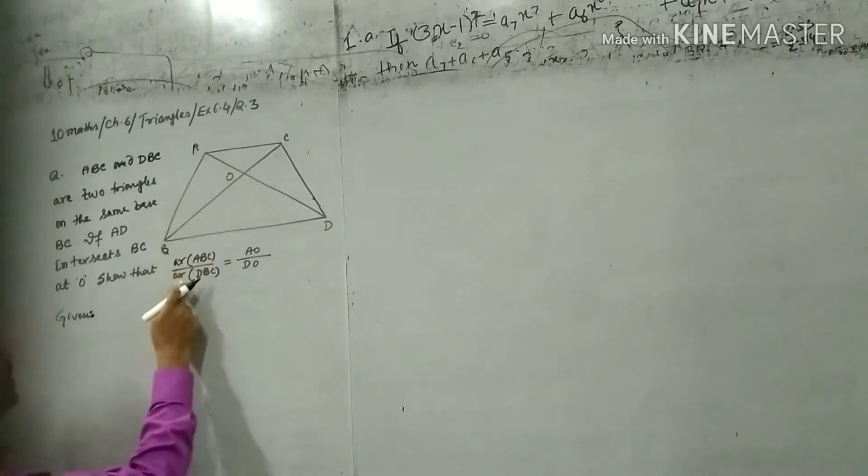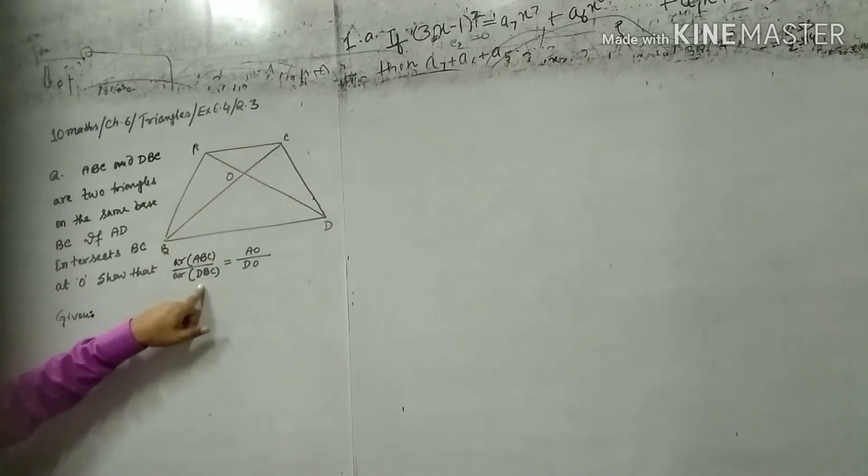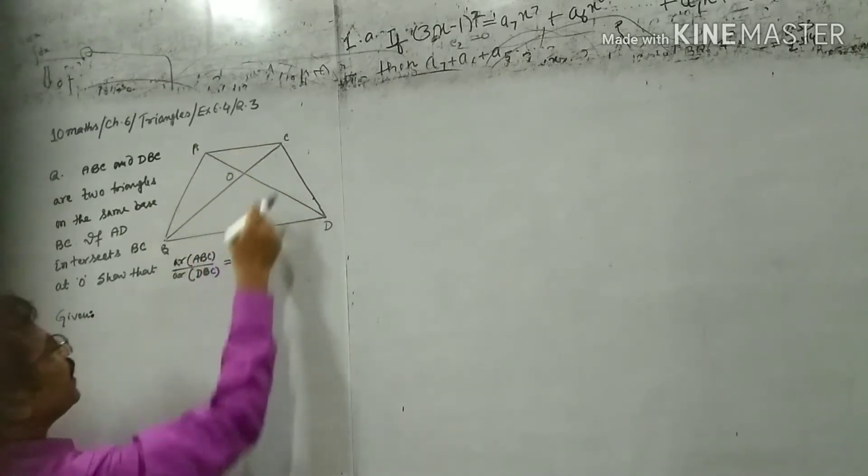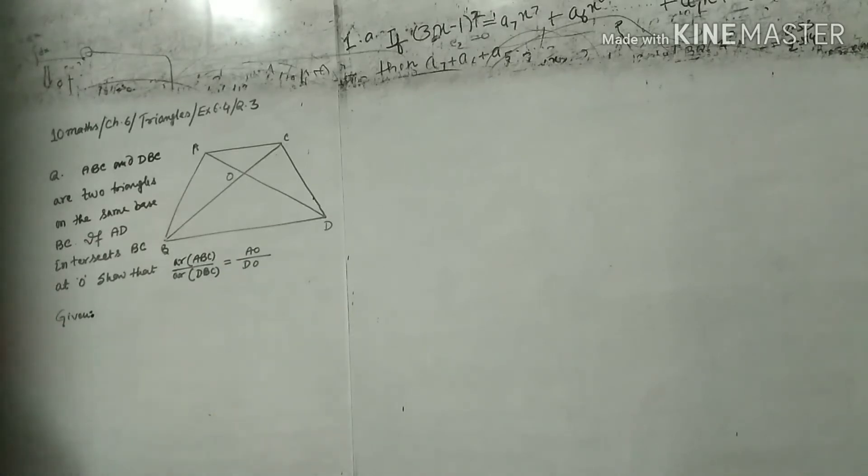Prove that area of triangle ABC, that is ADC, area of triangle ABC ratio area of triangle DBC equals to AO upon DO.